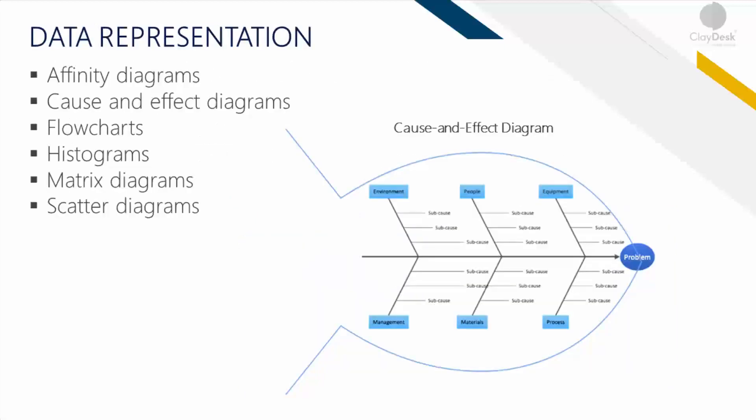For data representation in managed quality, you can use tools like affinity diagrams, cause and effect diagrams, fishbone diagrams, flowcharts, histograms, matrix diagrams, and scatter diagrams. These are primarily statistical techniques. SPSS is a good software by IBM that you can use to input data in rows and columns, and then run regression analyses, linear correlations, and so on.